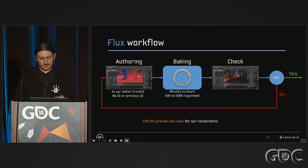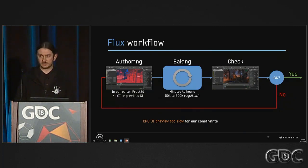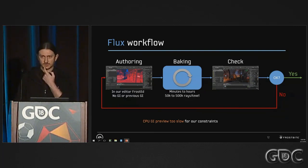We did try CPU GI preview with what the lightmapper was providing at the time, but that was too slow for our constraints. So we stepped back and thought about the problem.